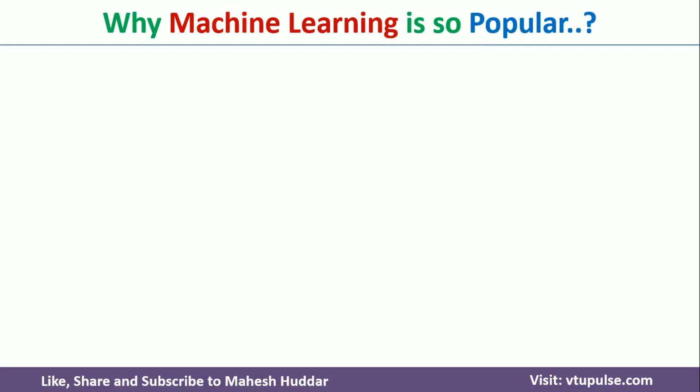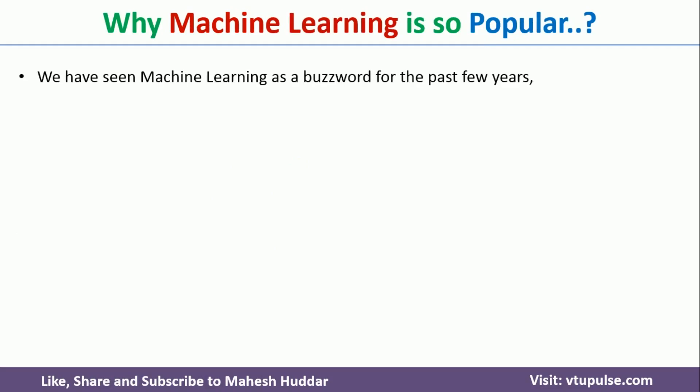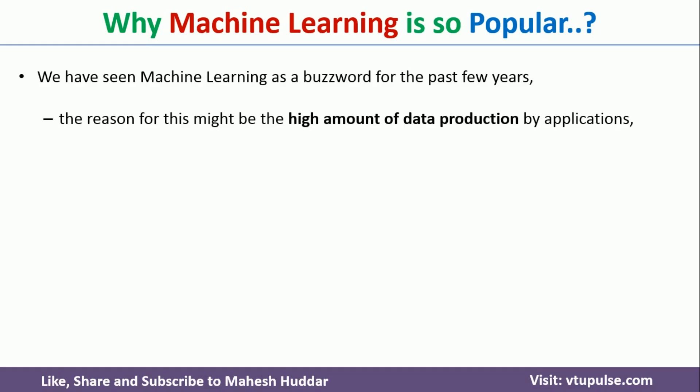Now comes the very important question: why is machine learning so popular? There are mainly three reasons why machine learning has become so popular in recent times. Machine learning is not a new topic — it was evolved a long time back — but it has gained a lot of attention recently. The first reason is there is a high amount of data produced by every application. For example, Facebook, WhatsApp, or any other social media websites generate a lot of data every day, and that data can be used to analyze and make better business decisions.